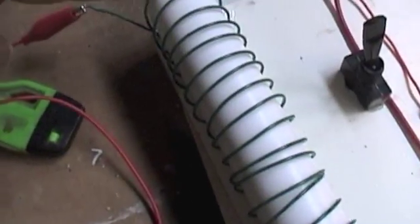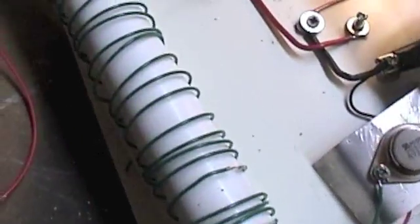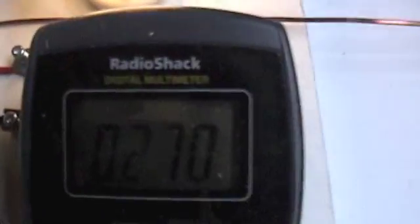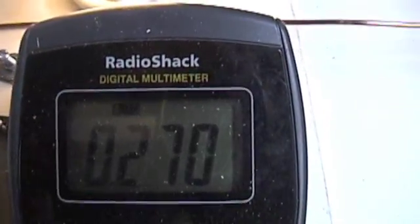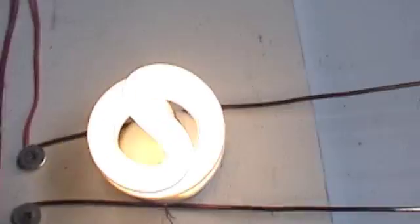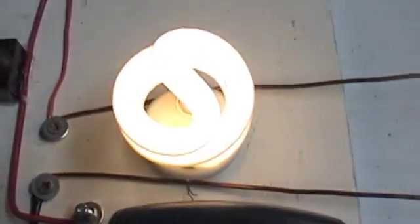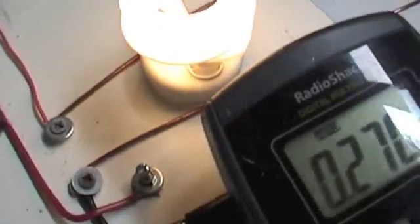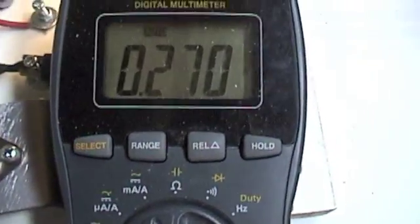So actually 25 turns, 25 turns, fully along the secondary, gives me 0.27 amps, 270 milliamps, and the bulb is very nicely bright. It's not 100% bright, I don't know what you'd consider this, maybe half bright, but it's usable, and that's a very low amp drop.